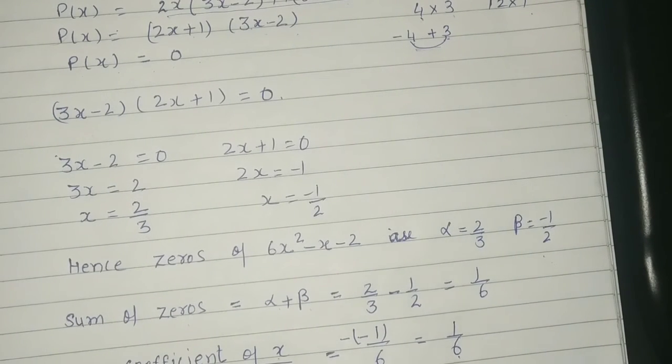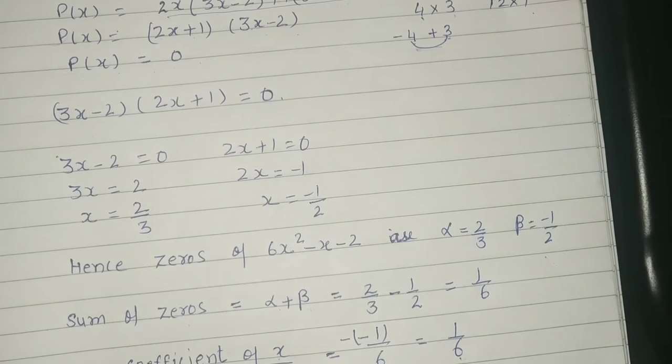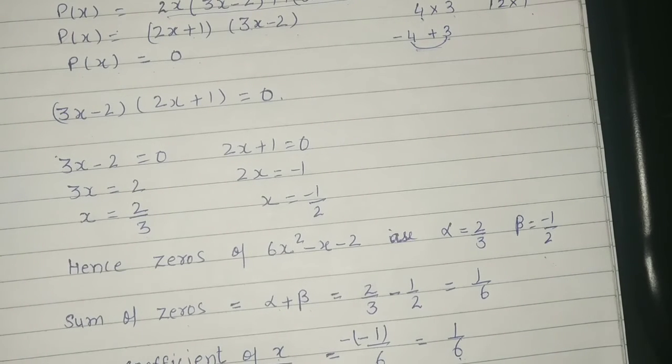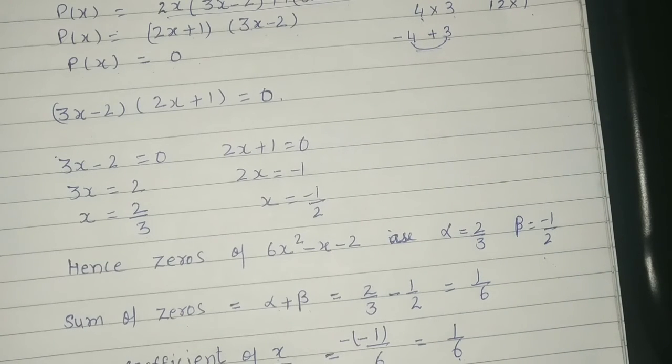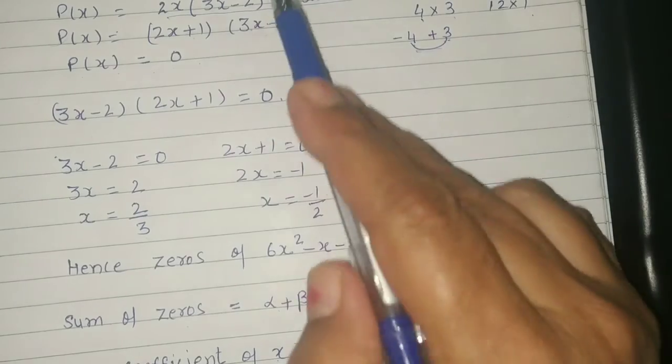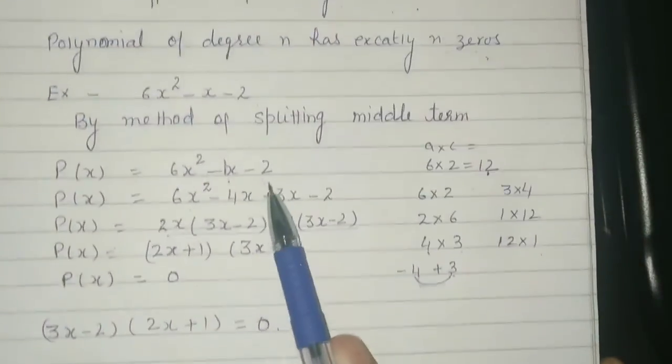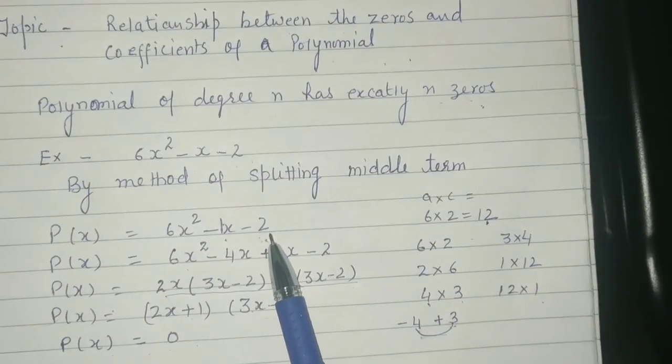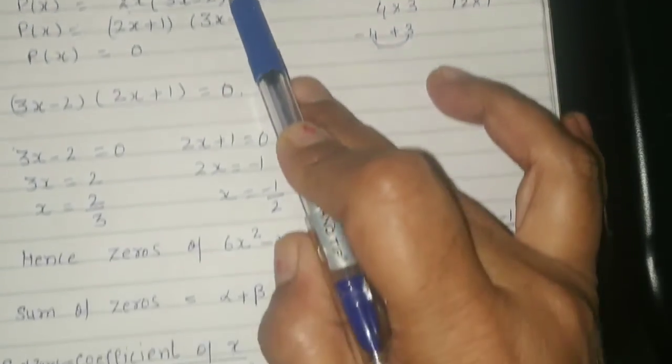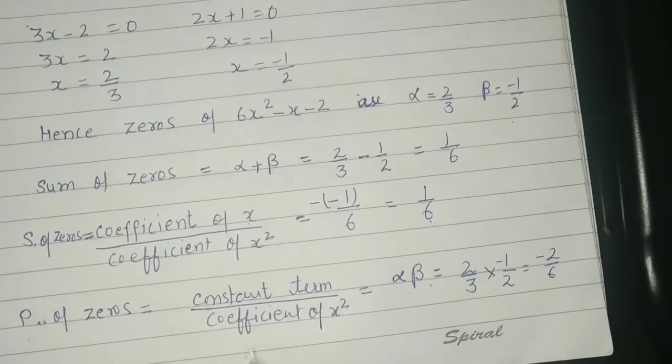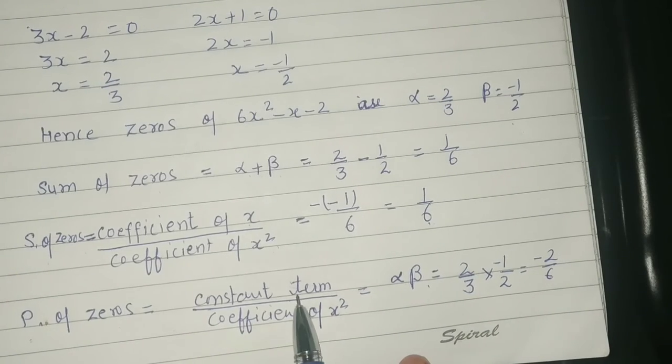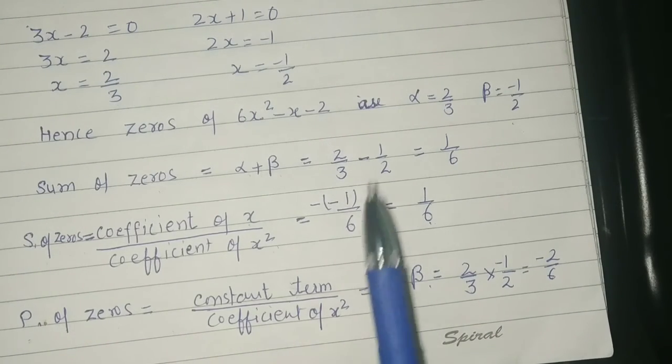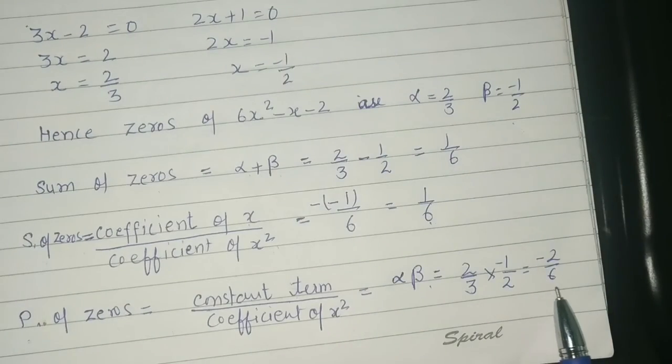If we need to find product of zeros, it is equal to 2 upon 3 multiplied by minus 1 upon 2. We get minus 2 upon 6. And it is also equal to constant term upon coefficient of x squared. Constant term is minus 2 and coefficient of x squared is 6.